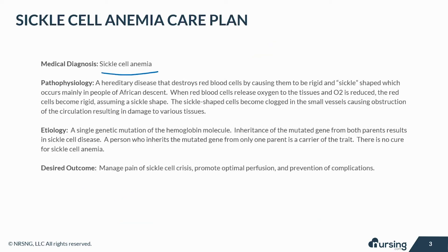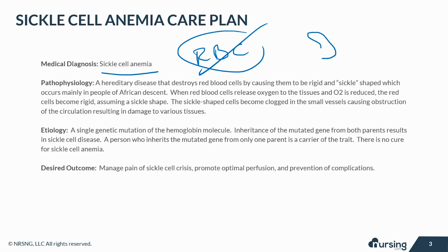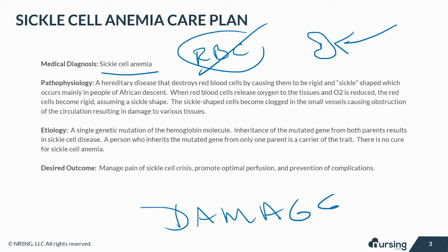Sickle cell disease is a hereditary disease that destroys red blood cells by causing them to be rigid and sickle-shaped, which occurs mainly in people of African descent. When red blood cells release oxygen to the tissues and O2 is reduced, the red cells become rigid, assuming this sickle shape. The sickle-shaped cells become clogged in the small vessels, causing obstruction of the circulation, resulting in damage to various tissues.